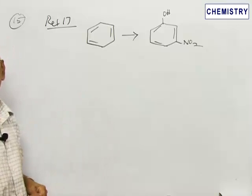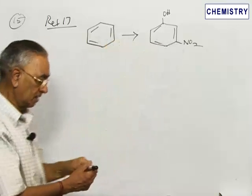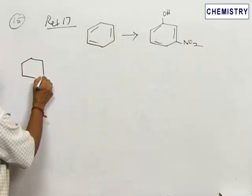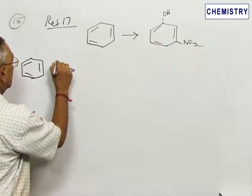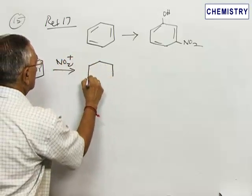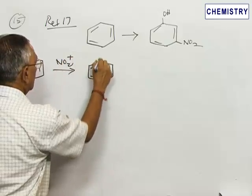This must be done in an indirect way. First, do a nitration. When benzene is treated under usual nitration conditions with concentrated sulfuric acid and nitric acid, a nitronium ion is introduced and we get nitrobenzene.